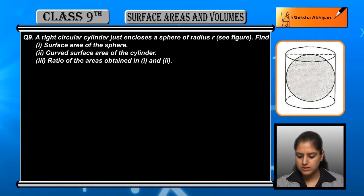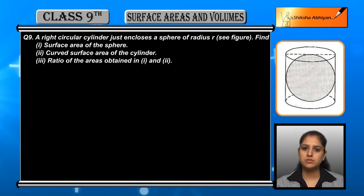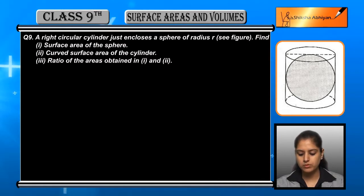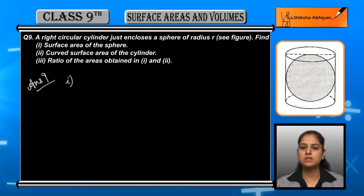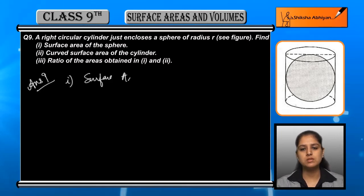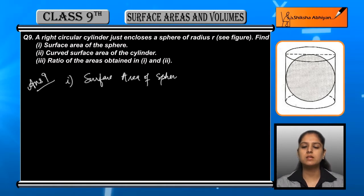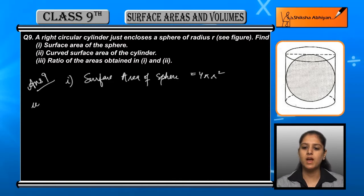In the figure you can see the cylinder has a sphere enclosed in it, and the radius of the sphere is r. The first point is to find out the surface area of the sphere. The surface area of the sphere is equal to 4πr².